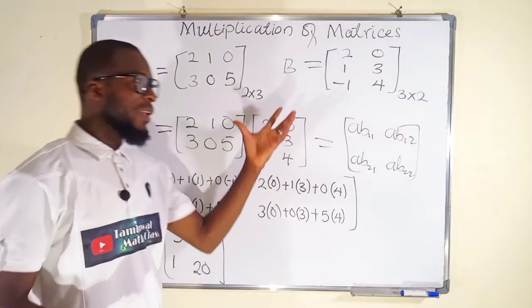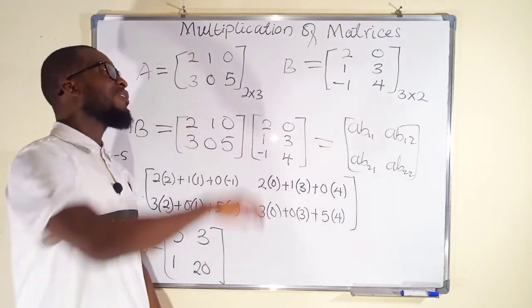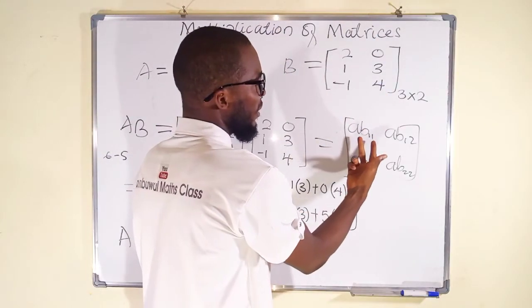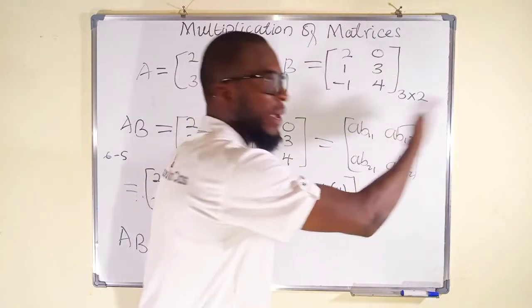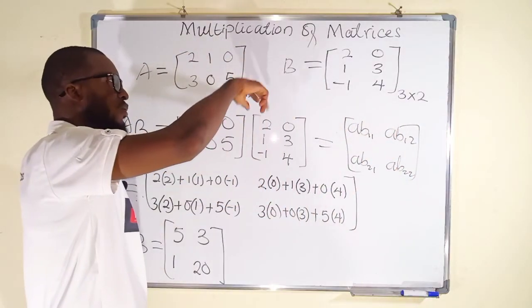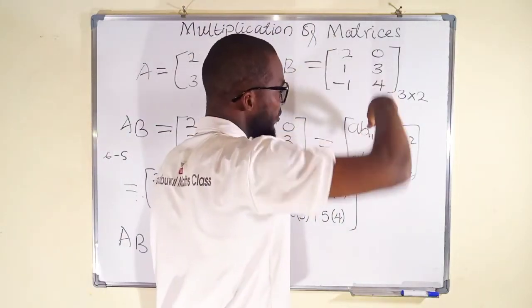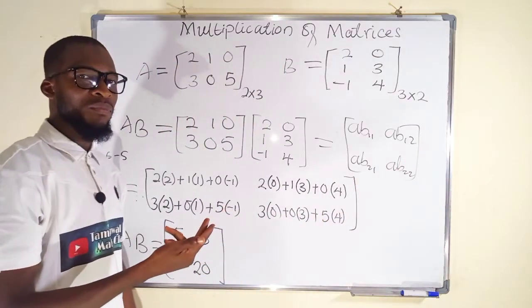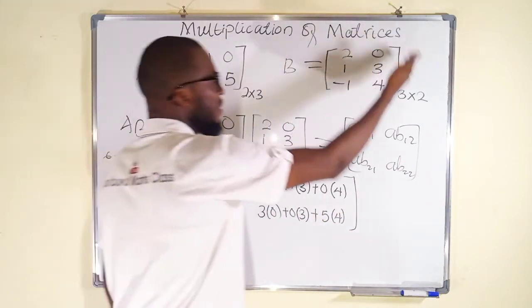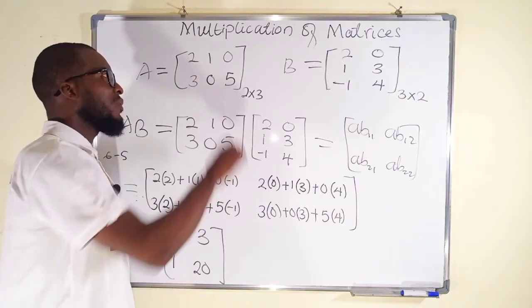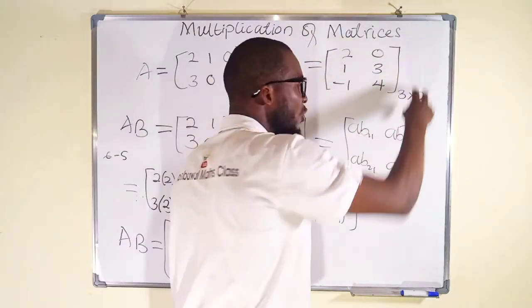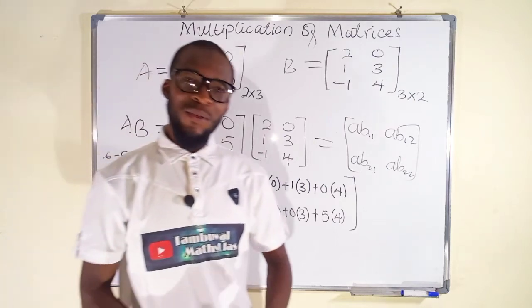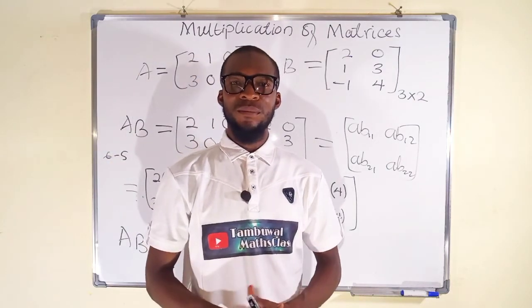This is how to multiply matrices together. Use the first row to multiply all the columns in order to obtain the top elements, then use the second row to multiply all the columns to obtain the second row elements. Even if there are more rows, you continue in that order. Thank you for watching and have a nice day.